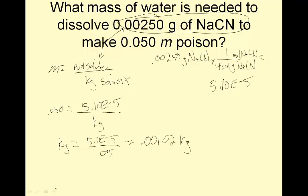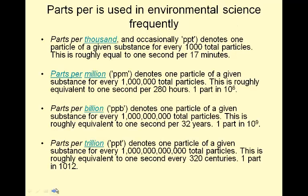That's my moles of solute. 5.10E-5 moles over kilograms. Solve for kilograms. Cross multiply. 5.1E-5 over 0.05 equals, divided by 0.05, 0.00102 kilograms, which would be, if I use environmental science frequently, that's pretty much all they use.